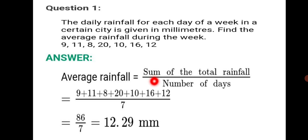We write average rainfall equals, always use the word sum. Sum means addition. Sum of the total rainfall upon number of days. Because the daily rainfall is given for each day of a week, we have to take it upon number of days. In a week there are seven days. So we add 9 plus 11 plus 8 plus 20 plus 10 plus 16 plus 12 upon 7. The total comes to 86 upon 7. When you divide it further you get 12.29 millimeters. This way we have completed question number one.